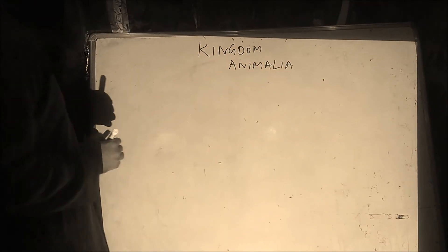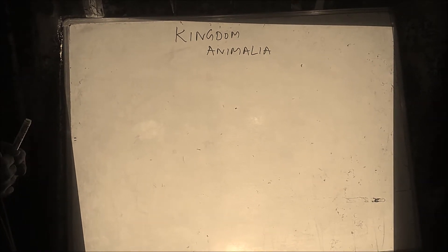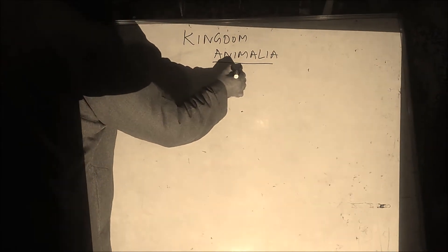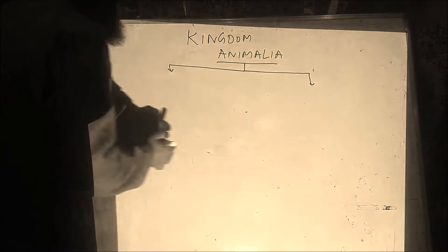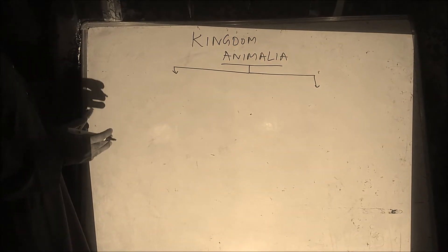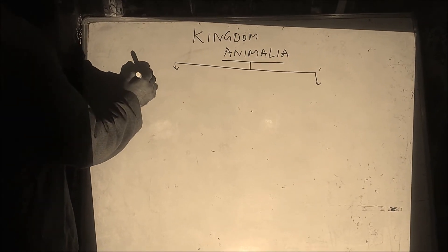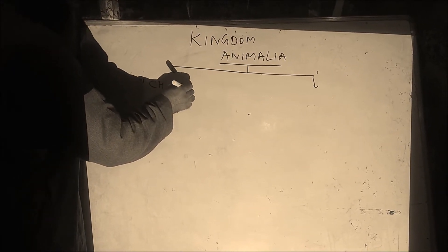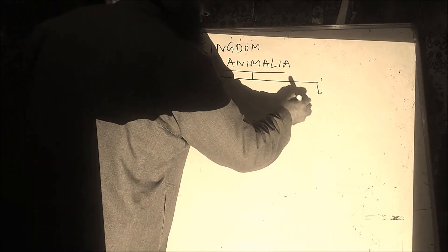These 1.2 million creatures, which are known as Animalia, they are very, very diverse. And these diverse animals, they are divided into two categories — two groups. One is known as the Chordates, and another is known as the Non-Chordates.